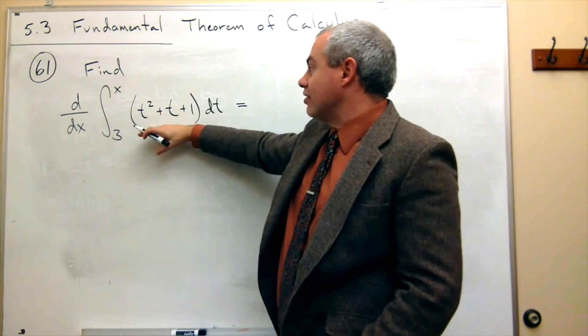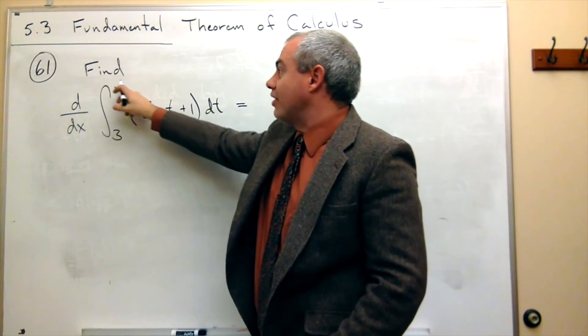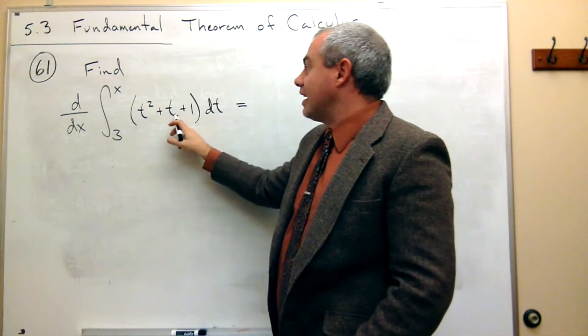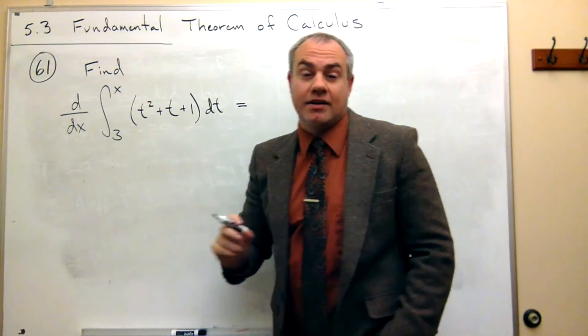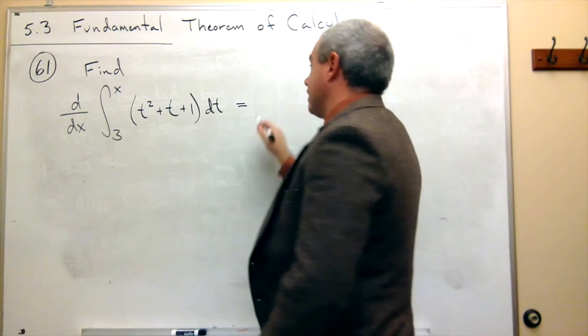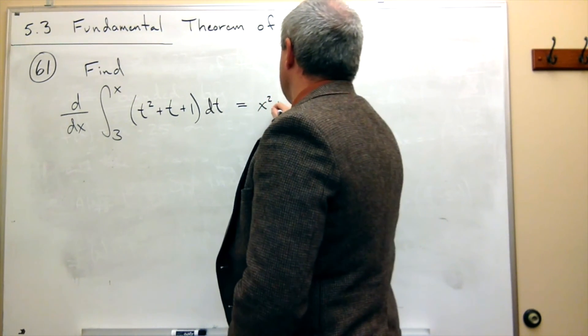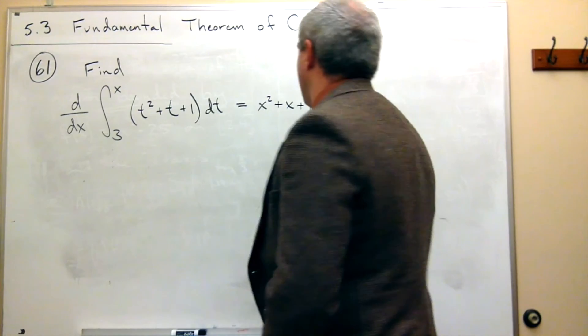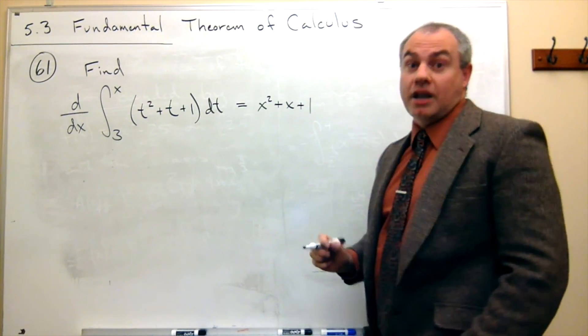then what the fundamental theorem tells me is just take this value x and plug it in everywhere that I have a t in my function. And so I get x squared plus x plus 1. And I'm done.